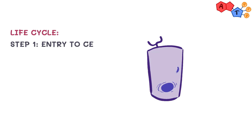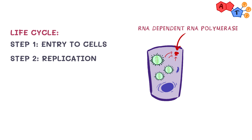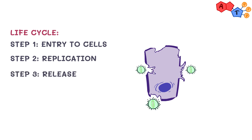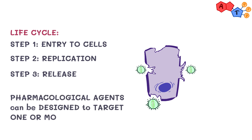For the life cycle, like many other viruses, coronavirus goes through three steps. Step 1 is entry to the cell — studies have shown that coronavirus uses the ACE2 receptor to enter the cell. Step 2 is replication, where it uses RNA-dependent RNA polymerase. Step 3 is release, where the virus exits the cell. Theoretically, pharmacological agents can be designed to target one or more of these steps.